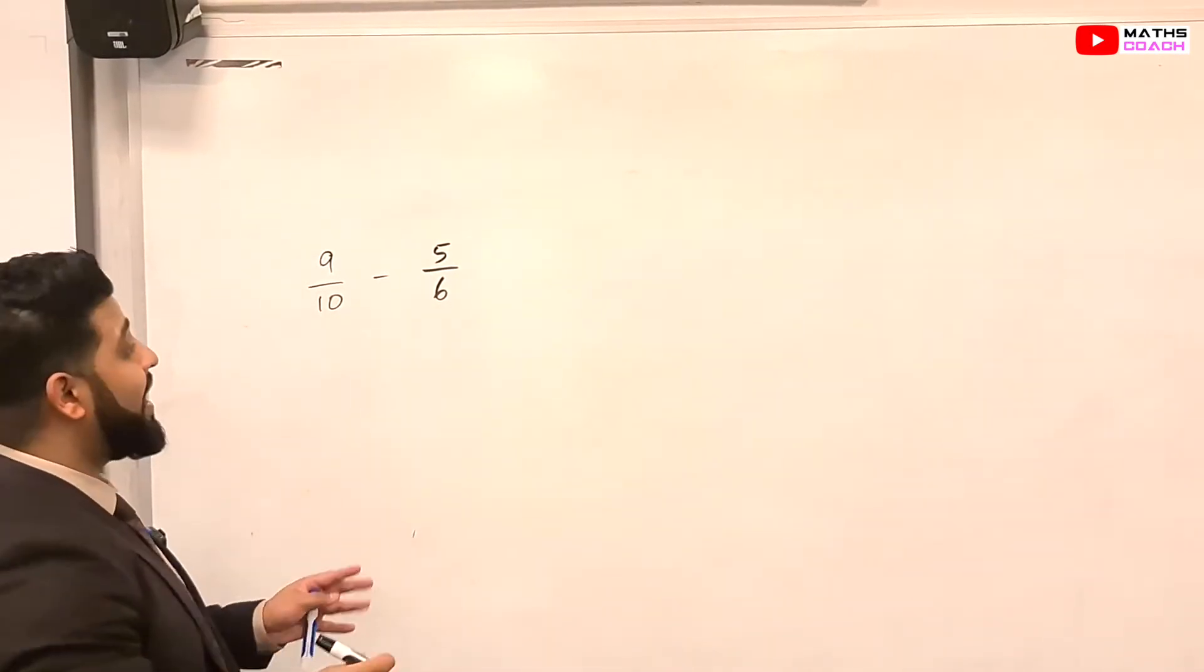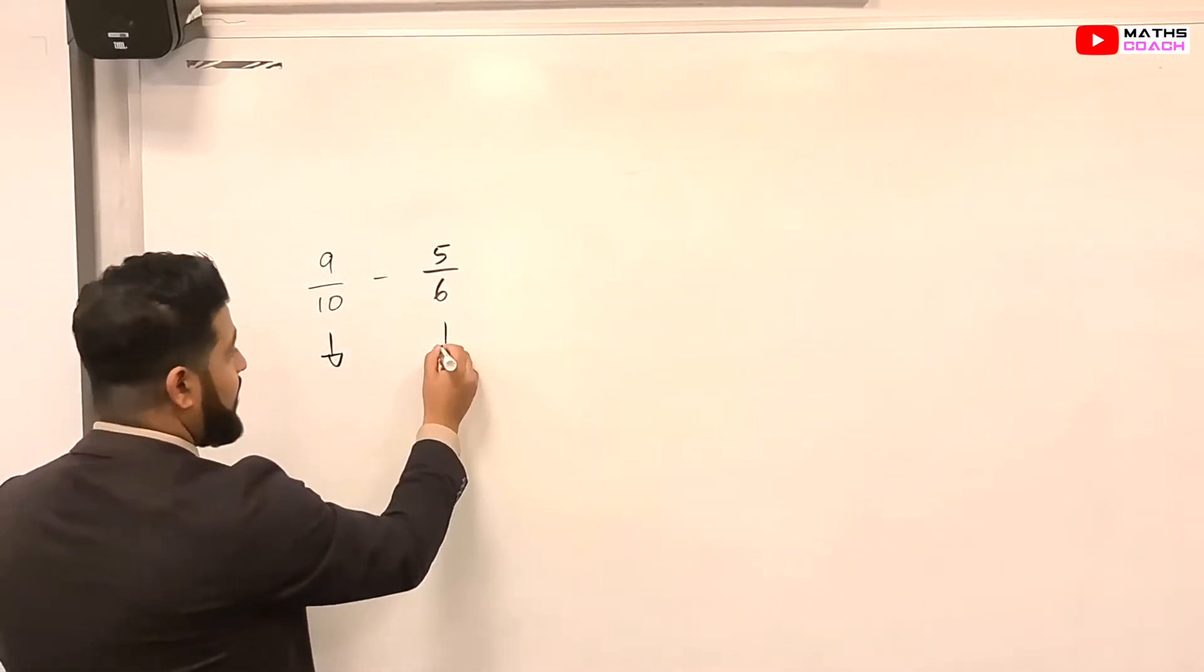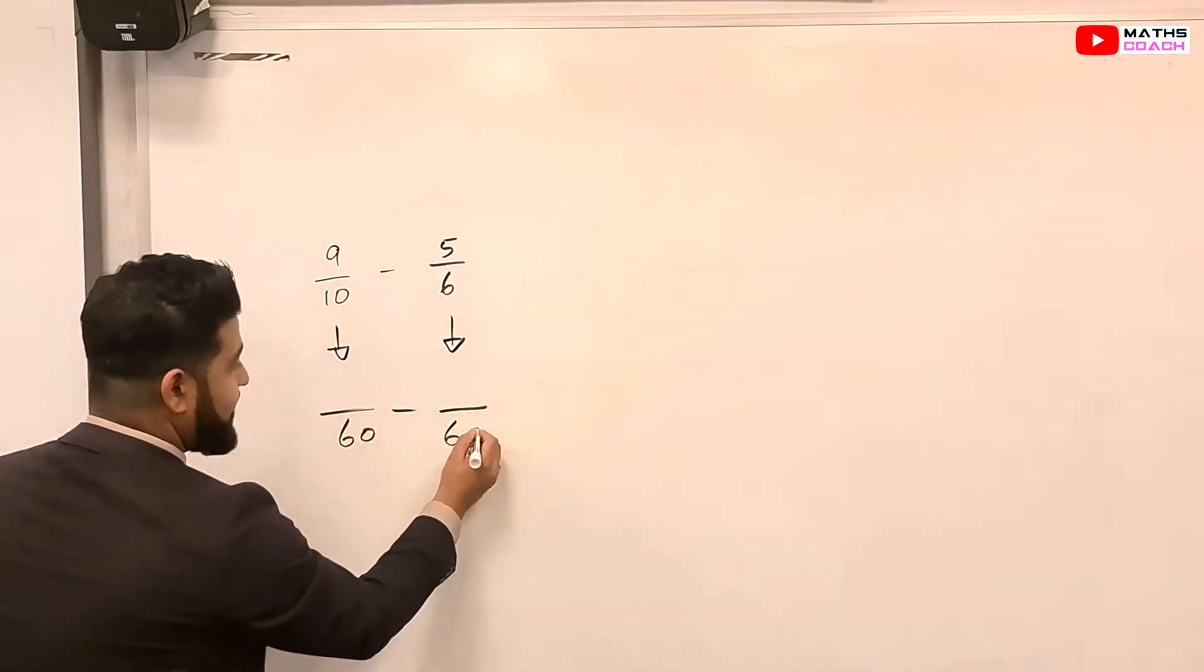And in fact, 60, which is the number, is actually the lowest common multiple of these numbers. So, let's write this down. So we're going to have 60 here as our denominator.